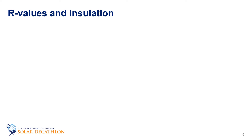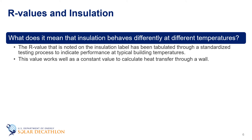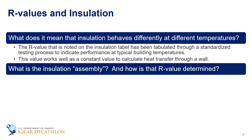That was a lot of really great information from Dr. Bianchi. Before we end this episode, I want to highlight a few things he mentioned. First, he noted that insulation behaves differently at different temperatures — but the R-value printed on the insulation label has been tabulated through a standardized testing process to indicate performance at typical building temperatures, and for most applications represents a constant that can be used to calculate heat transfer through the wall. Second, Dr. Bianchi expressed a distinction between the thermal resistance of individual materials and the insulation assembly — the assembly is made up of multiple layers of different materials, each with their own R-value.